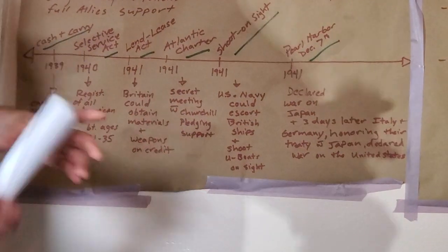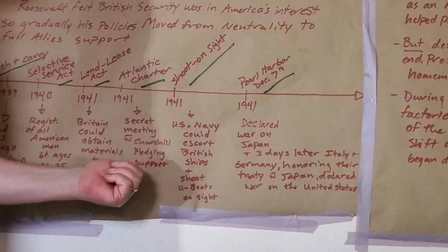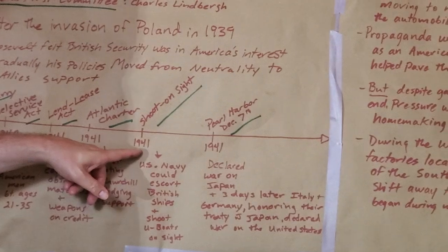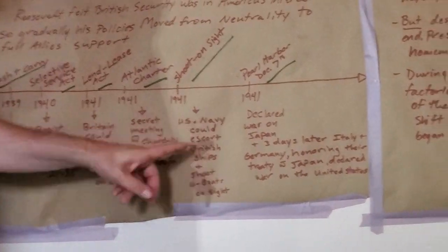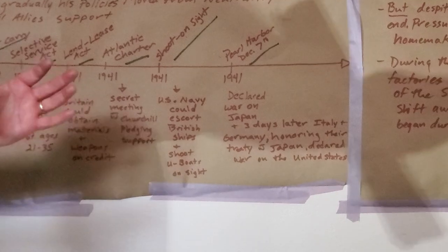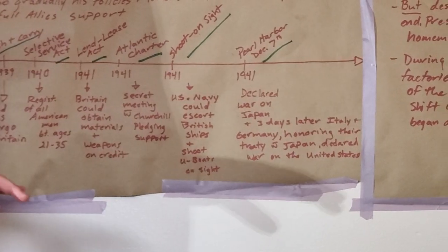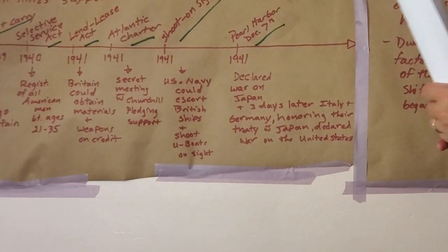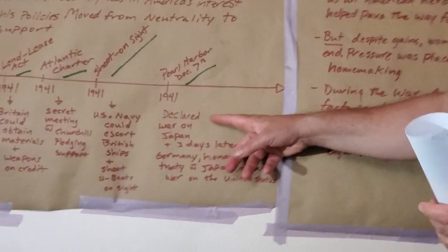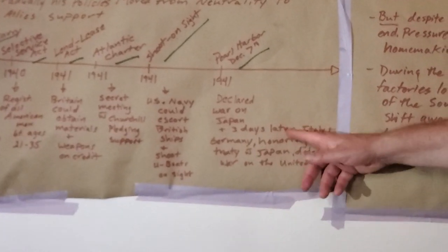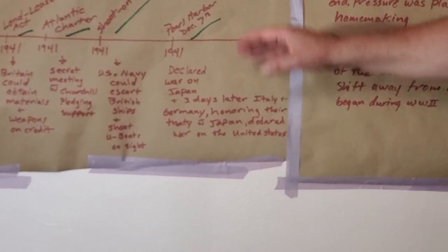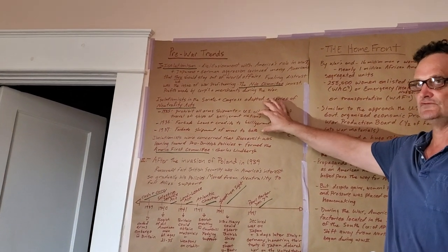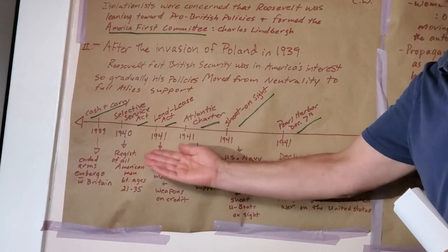Roosevelt secretly met with Churchill on a warship in the Atlantic and they pledged support to each other. Then in 1941, before December, they instituted shoot on sight — U.S. Navy ships escorting British ships in the Atlantic could shoot German U-boats on sight. And then finally Pearl Harbor on December 7th, the day of living infamy. The United States declared war on Japan, and because Germany and Italy had a treaty with Japan, they honored it and declared war on America three days later — obviously a foolish mistake. We want to focus on isolationism, the Neutrality Acts, and the unraveling of the Neutrality Acts.